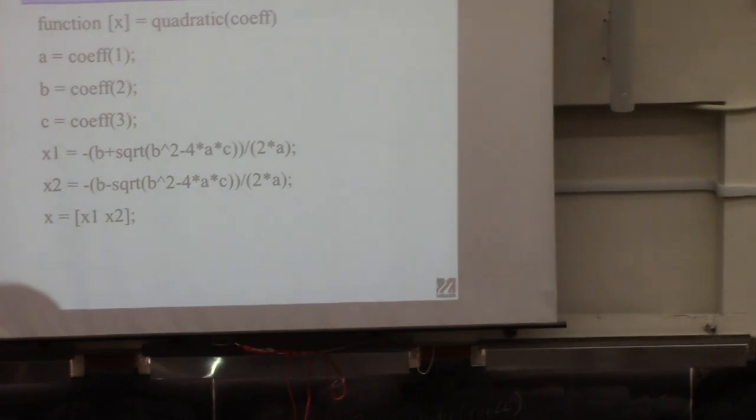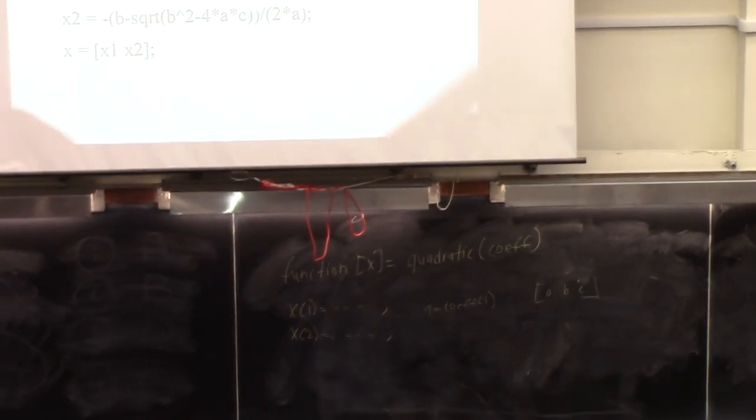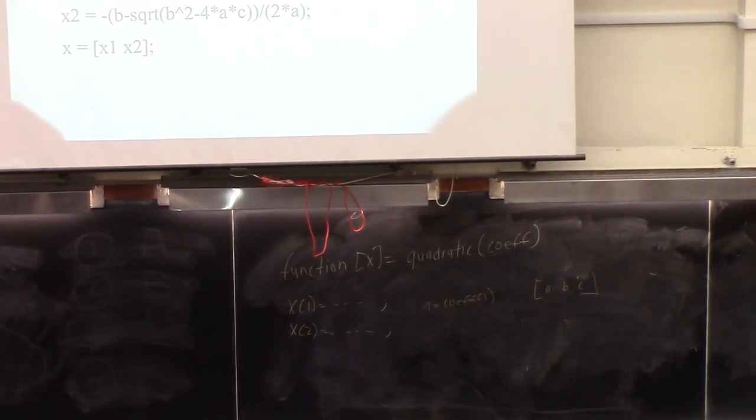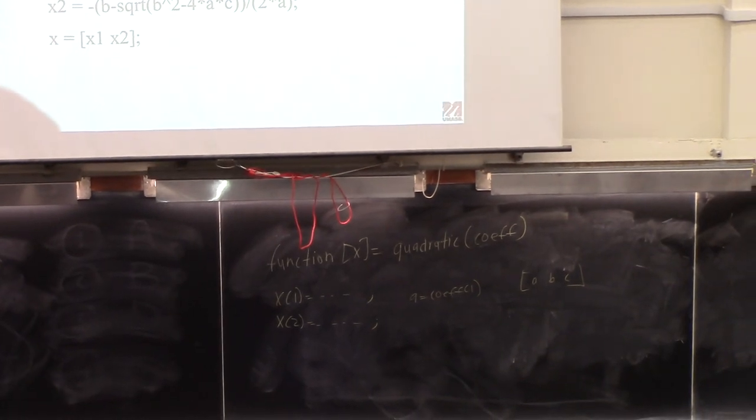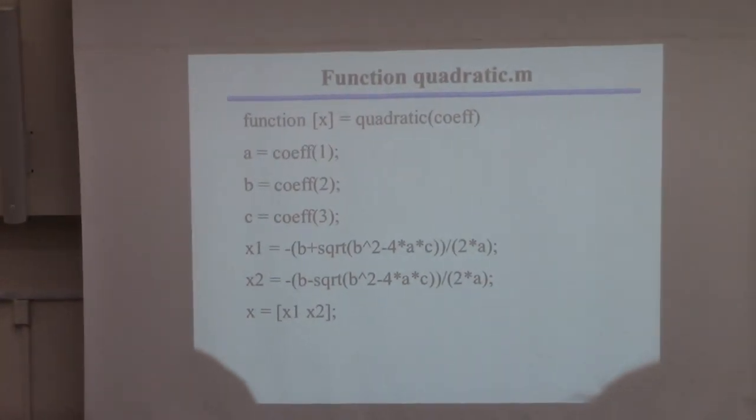Right. Well, first of all, you got to be careful the way you write your code. Because you see over here, you have divide by two. But you want to divide by 2a. So you got to put two parentheses around 2a. Because what that...